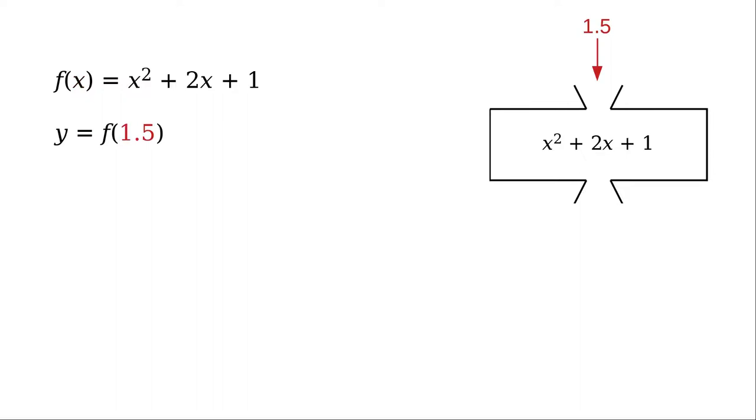When we apply the function, in this case by calculating f(1.5), 1.5 is the argument of the function. It's the input to our black box. The result of applying the function, the output from the black box, can be assigned to a different algebraic variable, in this case y.